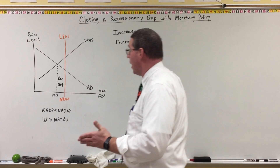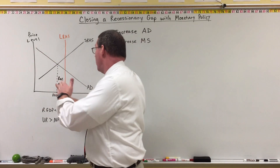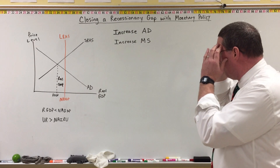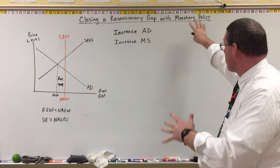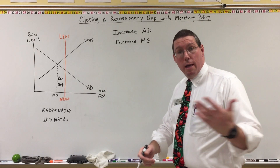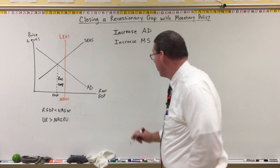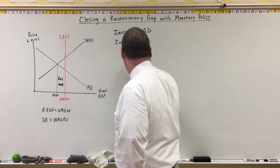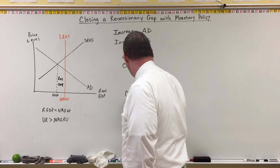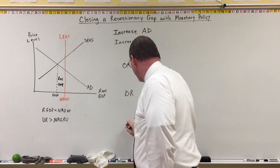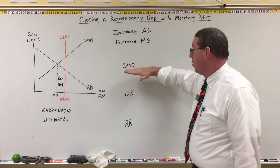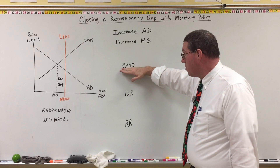An increase in aggregate demand will be a rightward shift of the aggregate demand curve and will close the recessionary gap. There are three monetary policy tools: open market operations, the discount rate, and the reserve ratio. This is in order of how they're going to use them — they'll use open market operations on a day-to-day basis, and if that isn't working, they'll move to the discount rate, then the reserve ratio.